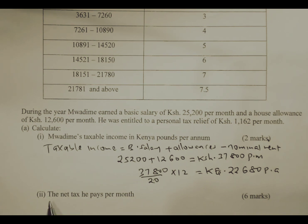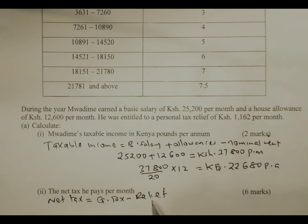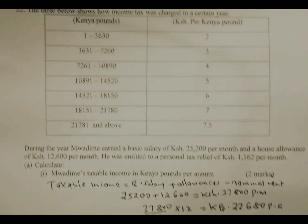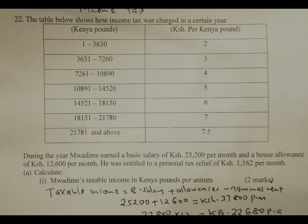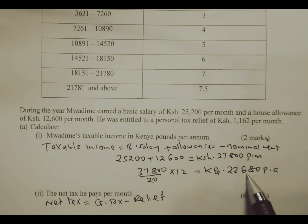We move to part (ii) of the question: calculate the net tax he pays per month. To get the net tax, we take the gross tax then subtract the relief. First, we calculate the gross tax, which is calculated from the tax brackets. We are going to tax twenty-two thousand six hundred and eighty Kenyan pounds per annum.